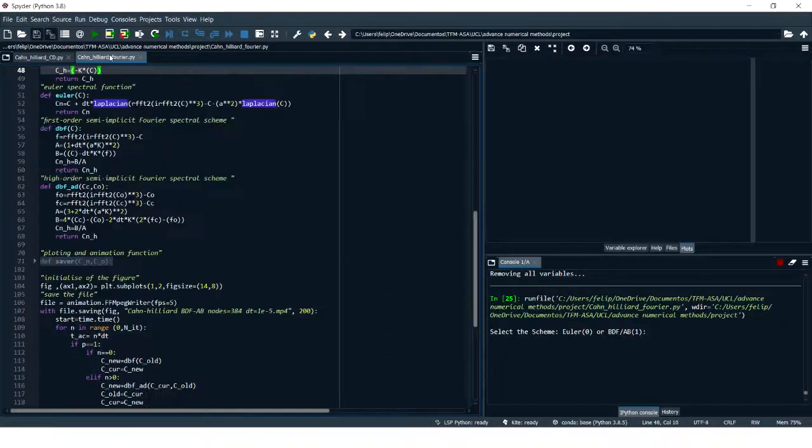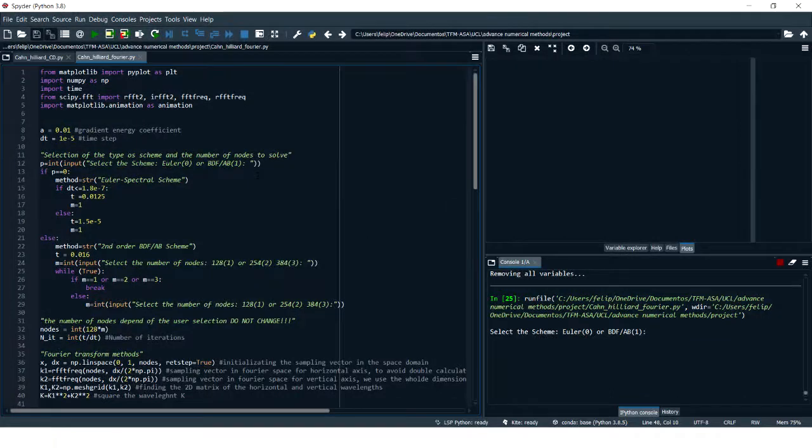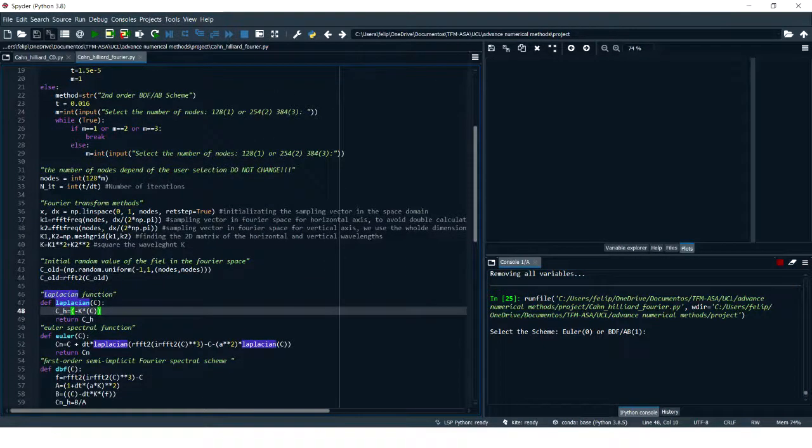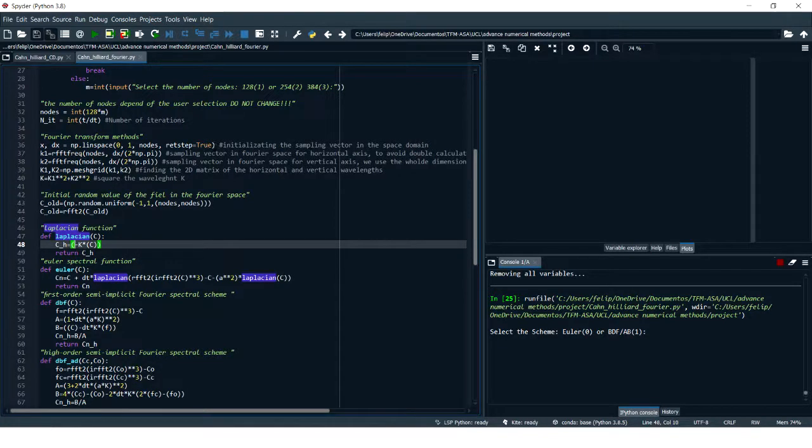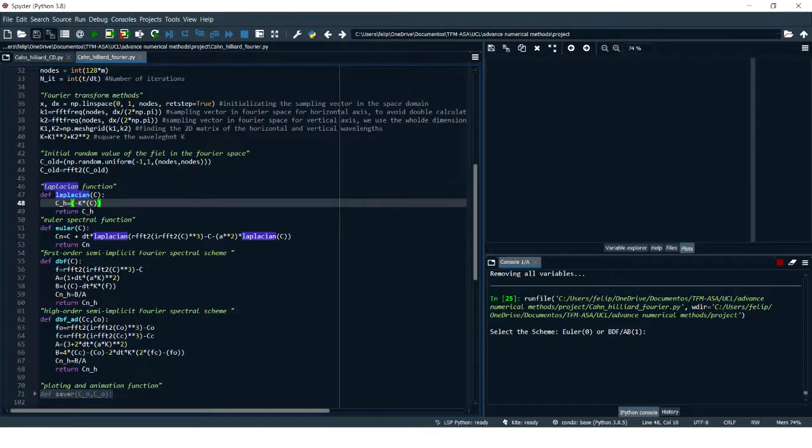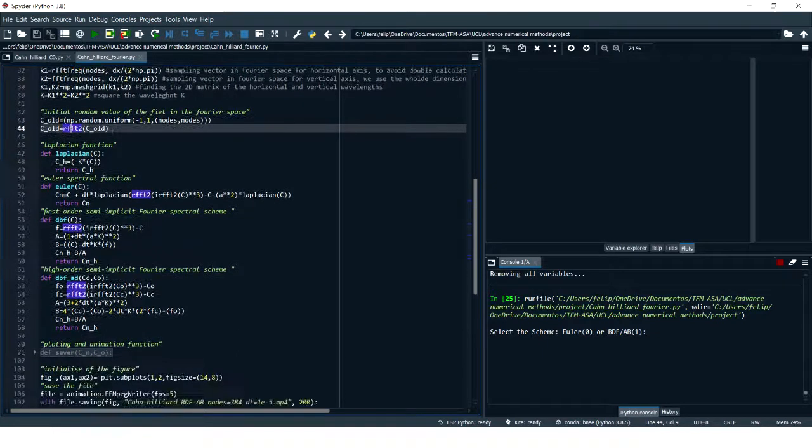Now I am going to explain the second approach with the spectral methods. Here we have the program for the two approaches. As with the last program, we define the initial condition. This one is for selecting the method that we want to solve, and the number of nodes. We discretize the x vector in the space domain, and then we change it to the spectral domain to find the 2D matrix of the horizontal and vertical wavelength. Then we find the magnitude of the wavelength K. As before, we define random values in the space domain, and then as we are working all the program in the spectral domain, we use FFT2 to change to the spectral domain. In the first method, we use the Laplacian function as the equation was explained, and then the Euler approach. That's the Cahn-Hilliard equation.